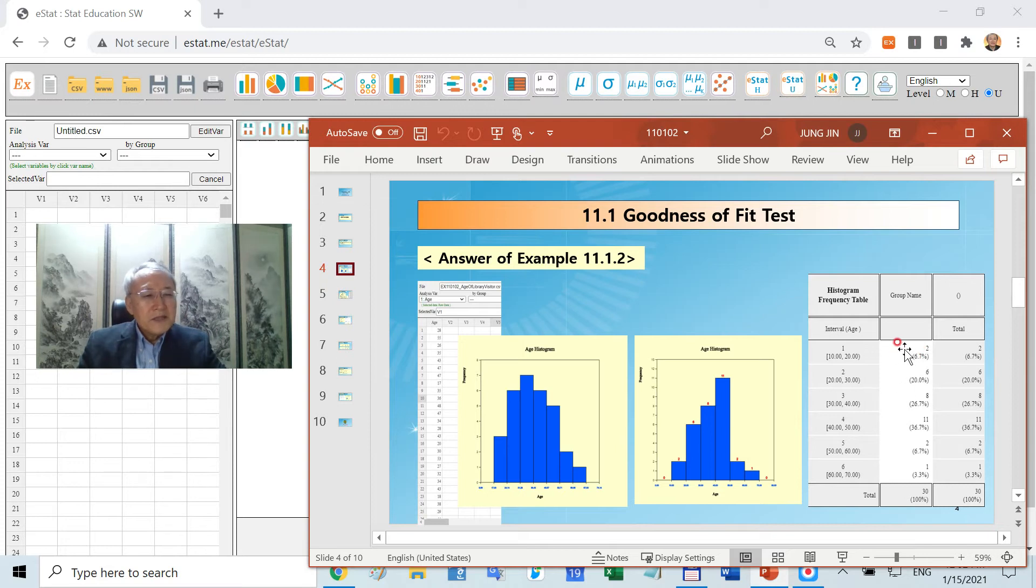These are the observed frequencies for each interval. What you need is to calculate expected frequency, or expected probability first. How can you calculate the expected probability?